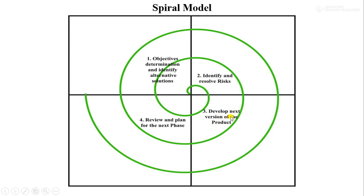After the second quadrant, we move to the third quadrant. In this third quadrant, we need to develop the next version of the product. After successfully resolving the risks, we develop the next version, show it to the customer, and review whether it is working according to our plan and functional requirements. Then we discuss different strategies. If the customer accepts the project, we can end the process; otherwise, we repeat the iteration until the project is successfully completed.